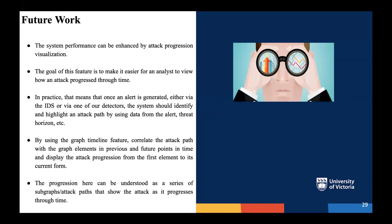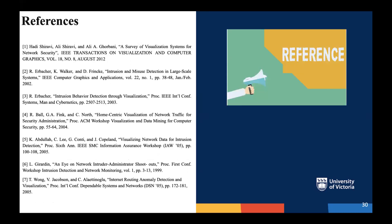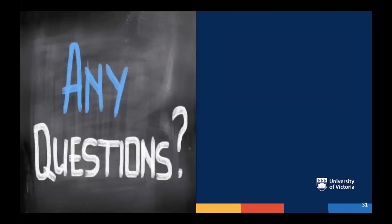As future work, the system performance can be enhanced by attack progression visualization. The goal of this feature is to make it easier for an analyst to view how an attack progressed through time. Once an alert is generated via the IDS or one of the detectors, the system should identify and highlight an attack path using data from the alerts, threat horizon, etc. By using the graph timeline feature, it can correlate the attack path with graph elements at previous and future points in time, and display the attack progression from the first element to its current one. This progression can be understood as a series of sub-graphs or attack paths showing the attack as it progresses through time.